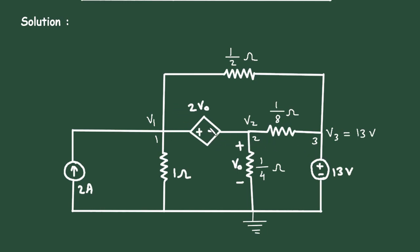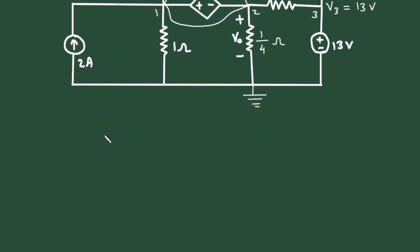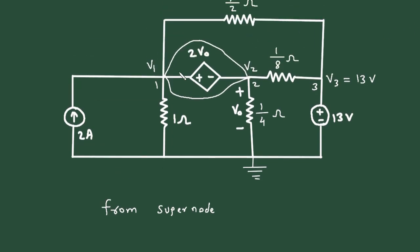Here we can see between node 1 and node 2 there is a dependent source. It is a voltage controlled voltage source, so this forms a supernode. From this supernode we can write — since V1 is connected to the positive terminal and V2 is connected to the negative terminal — V1 minus V2 is equal to 2VO.